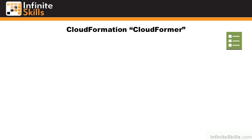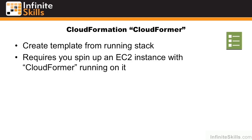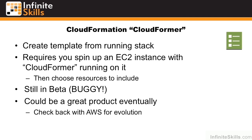CloudFormation also includes something called CloudFormer. This lets you create a template from a running stack of resources. For example, if you already spun up an entire stack with an ELB, autoscaling group, EC2 instances, and an RDS database, you can use CloudFormer to create a template of that stack. CloudFormer requires that you spin up another EC2 instance with the CloudFormer application running on it, then you go through and check the resources in your infrastructure that you want to include in the template. CloudFormer is still in beta and it is quite buggy, but I think it could be a great product eventually. Continue checking back with AWS to see how it evolves.